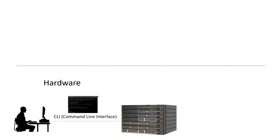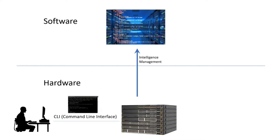With more features added to the operating system of the hardware, organizations decided to move some of the intelligence and management functions from the hardware to the software. The software has many components that make it the leader in any network. These components include, for example, artificial intelligence, machine learning, data analytics, virtualization, and cloud, in addition to many other components that make the software the leader in any technology advancement we've had in the past years.